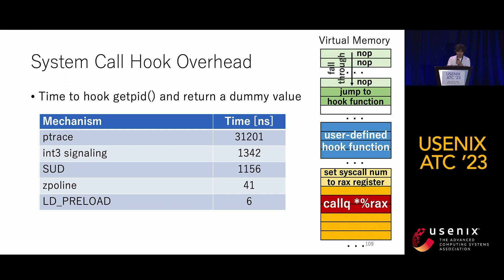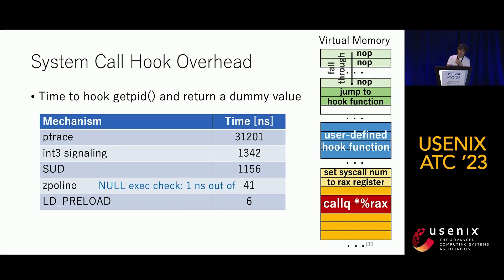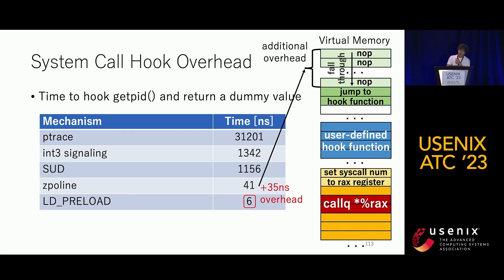We measured the overhead of Zeppelin by measuring the time to hook the getpid system call and return a dummy value. Compared to ptrace, signal-based, and SUD approaches, the overhead of Zeppelin is 28 to more than 700 times smaller. The overhead of the null execution check was one nanosecond out of 41 nanoseconds. Compared to LD_PRELOAD, Zeppelin has 35 nanoseconds of additional overhead, which comes from the NOPs in the trampoline code.